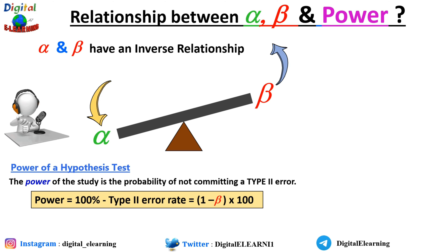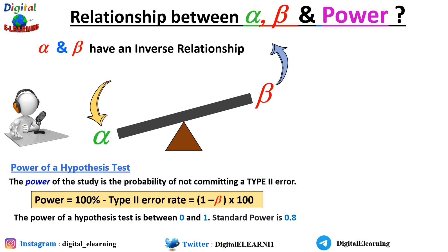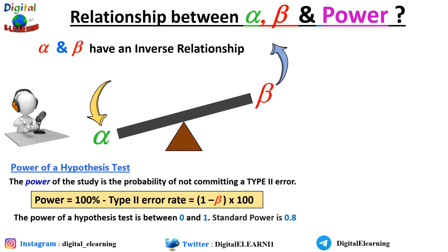The power of a hypothesis test lies between 0 and 1. The standard power that we normally use is 0.8. If your power is close to 1, that means it is good at detecting a false null hypothesis. If it is very close to 0, it is not very good at detecting a false null hypothesis.